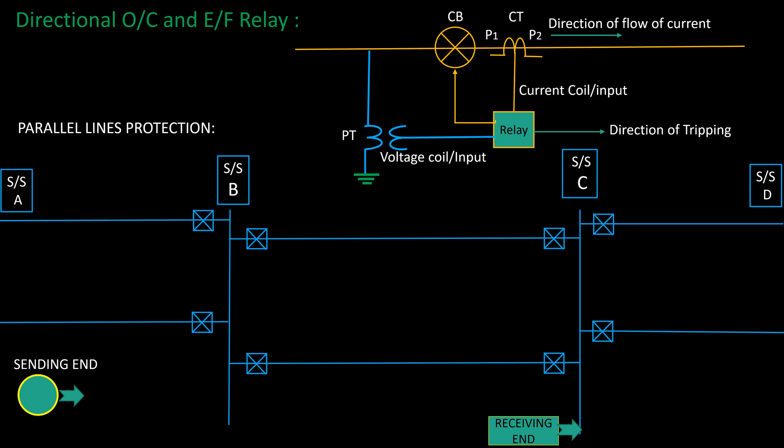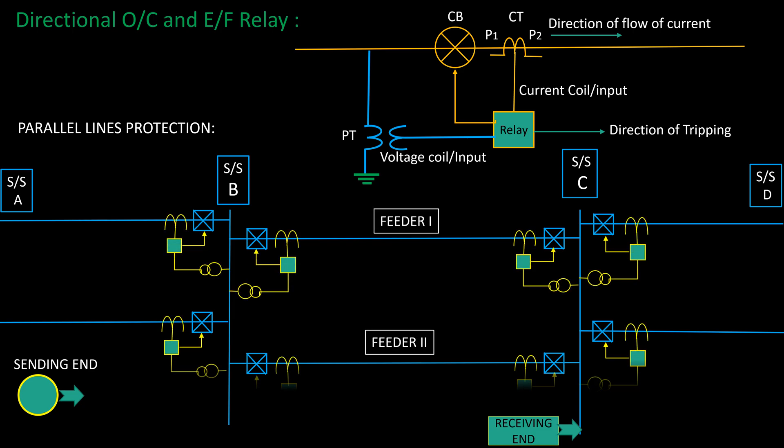Let us consider a part of the 132 kV power system shown in the picture. Here, substation B is getting power from substation A using double circuit parallel lines, and one 132 kV double circuit lines, feeder 1 and feeder 2, is feeding the substation C.